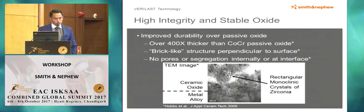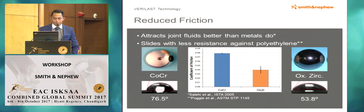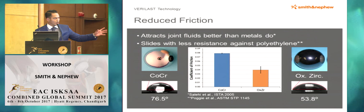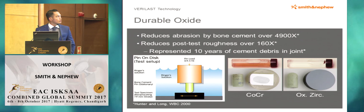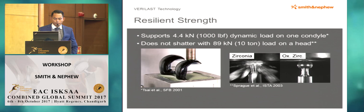This surface has improved durability over passive oxide — it's over 400 times thicker than cobalt chrome passive oxide. There's a brick-like structure, as shown in that picture, perpendicular to the surface. With regards to reduced friction, it attracts joint fluids better than metals, so there's less resistance when sliding against polyethylene compared to cobalt chrome, as that bar graph demonstrates. It reduces abrasion by bone cement by a factor of 4,900 times, and post-test roughness is over 160 times less. This represents 10 years of cement debris within the joint — so all very good advantages.